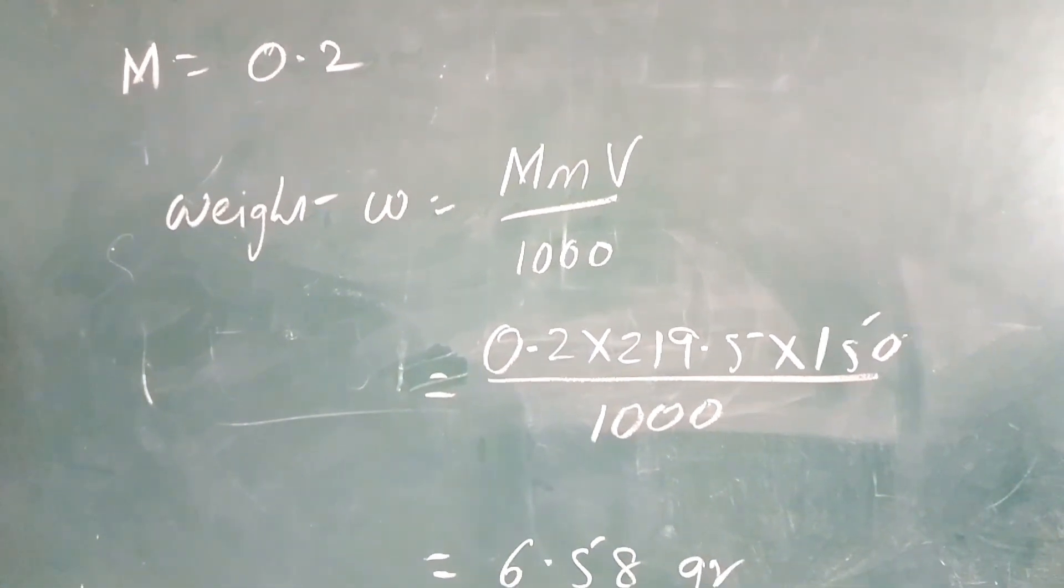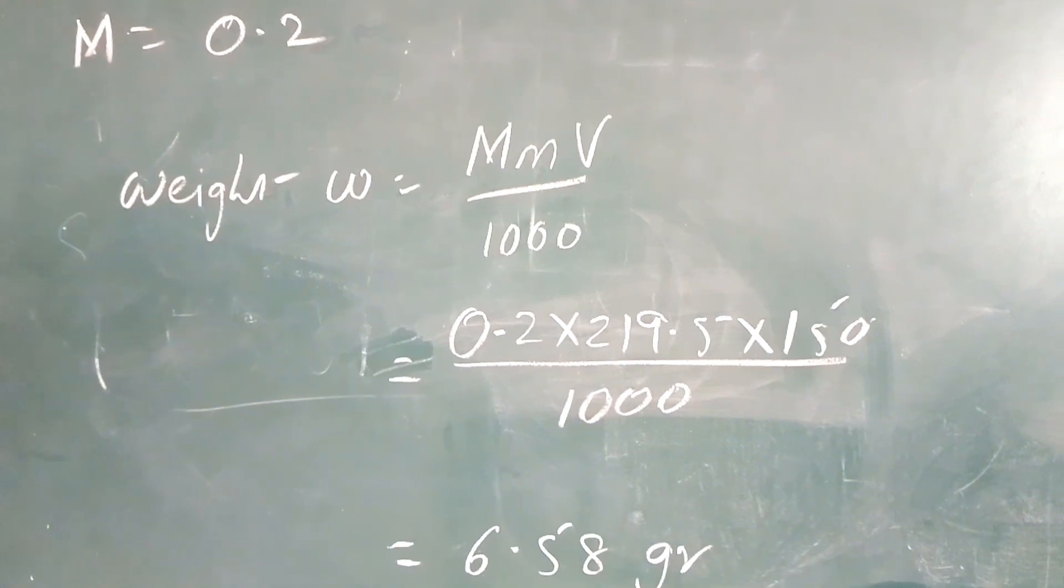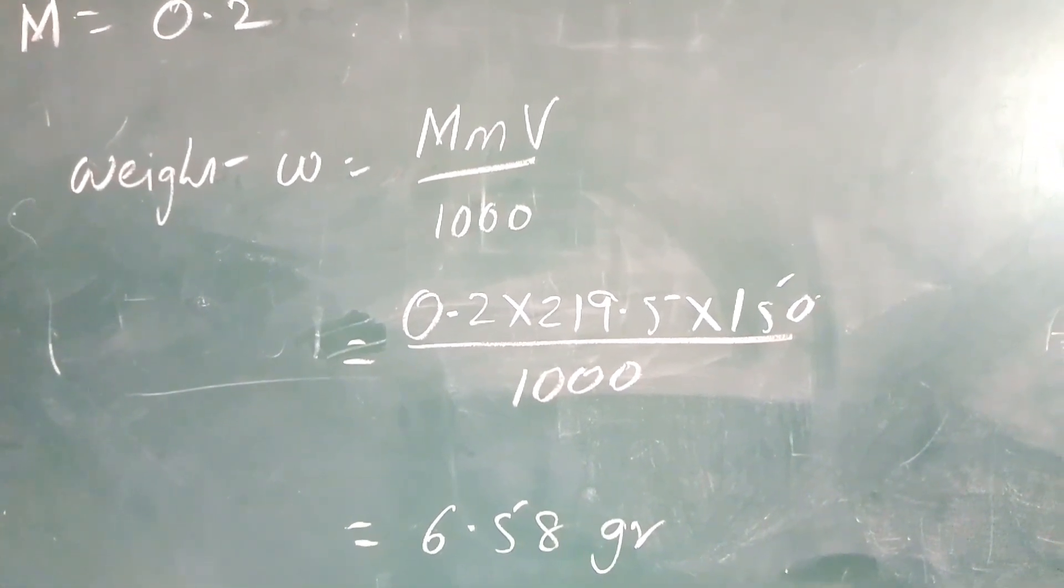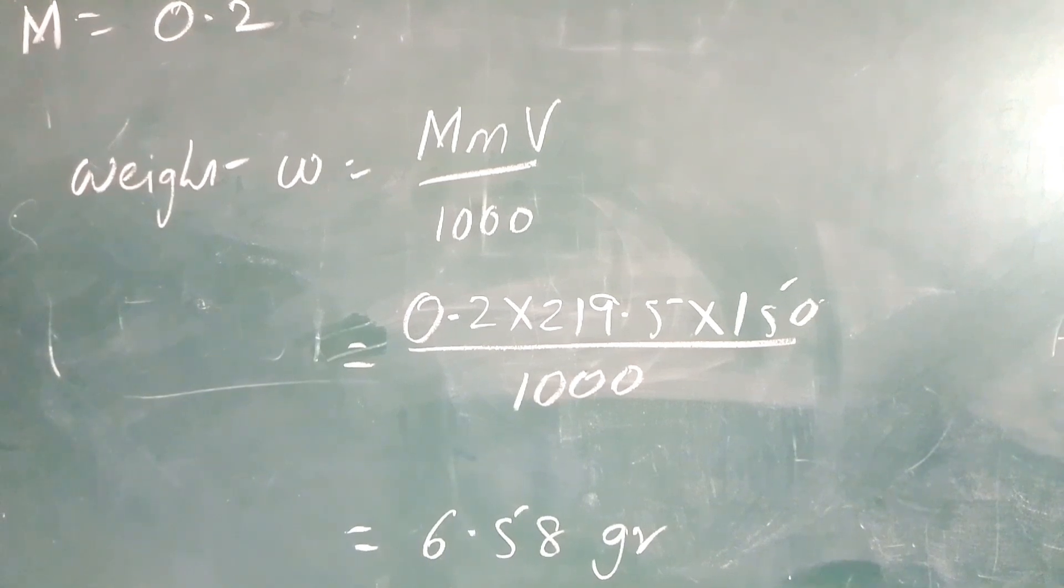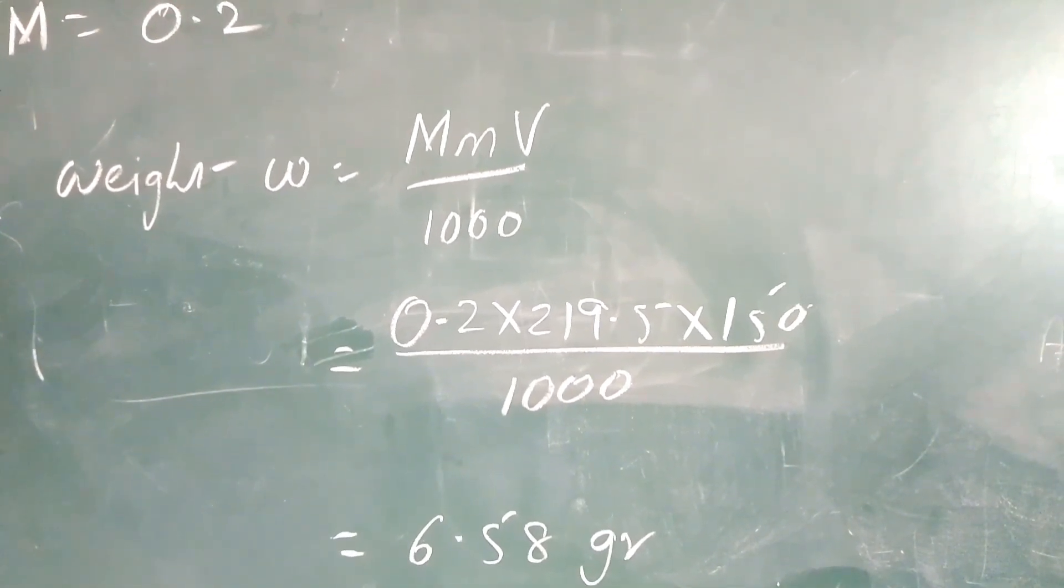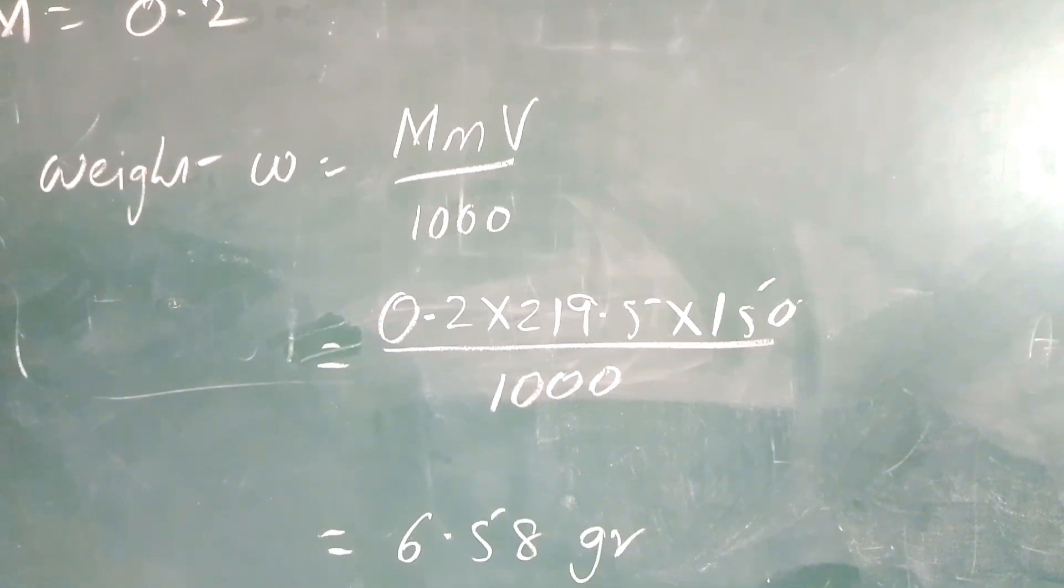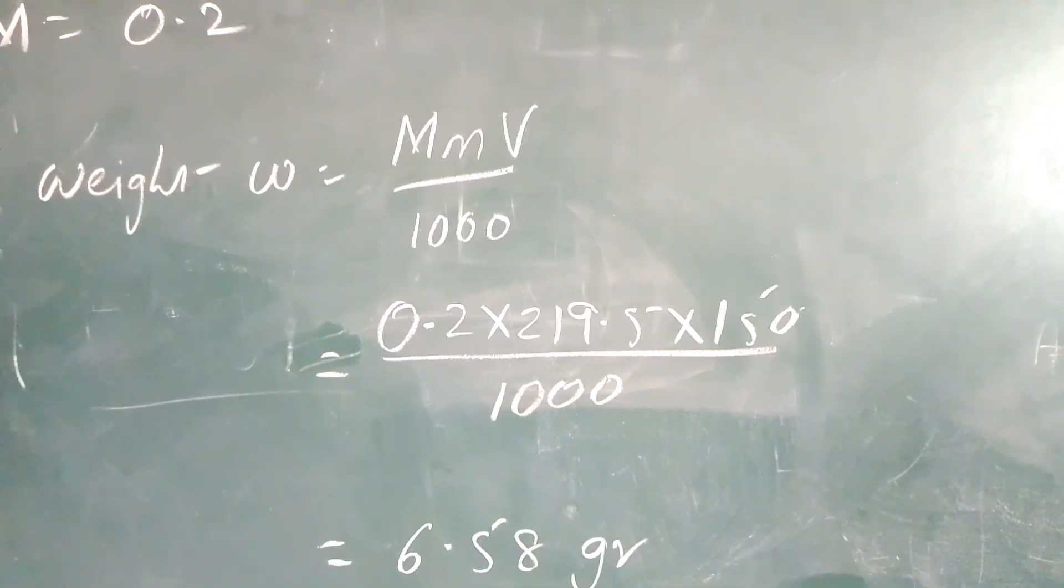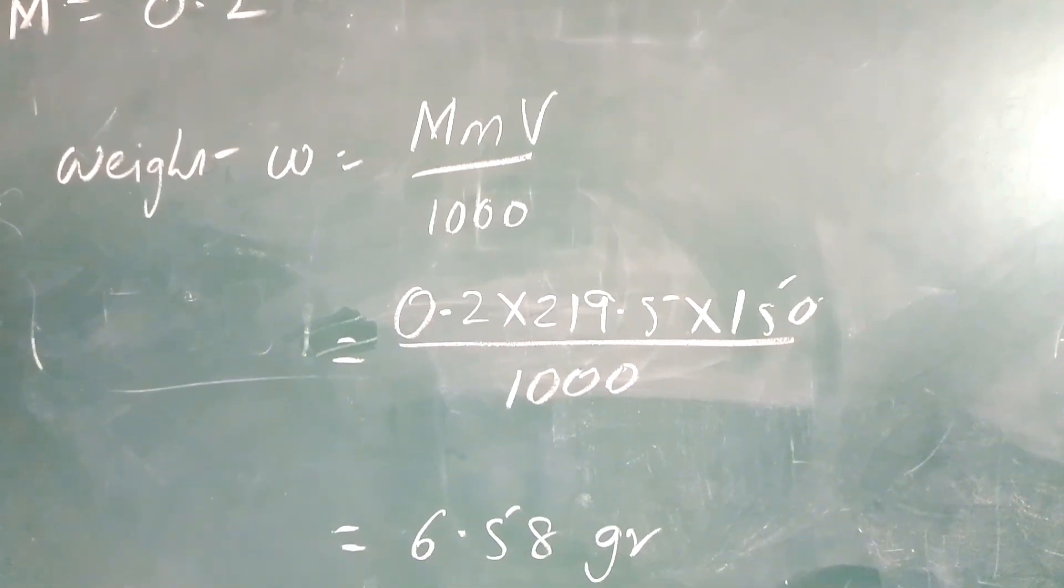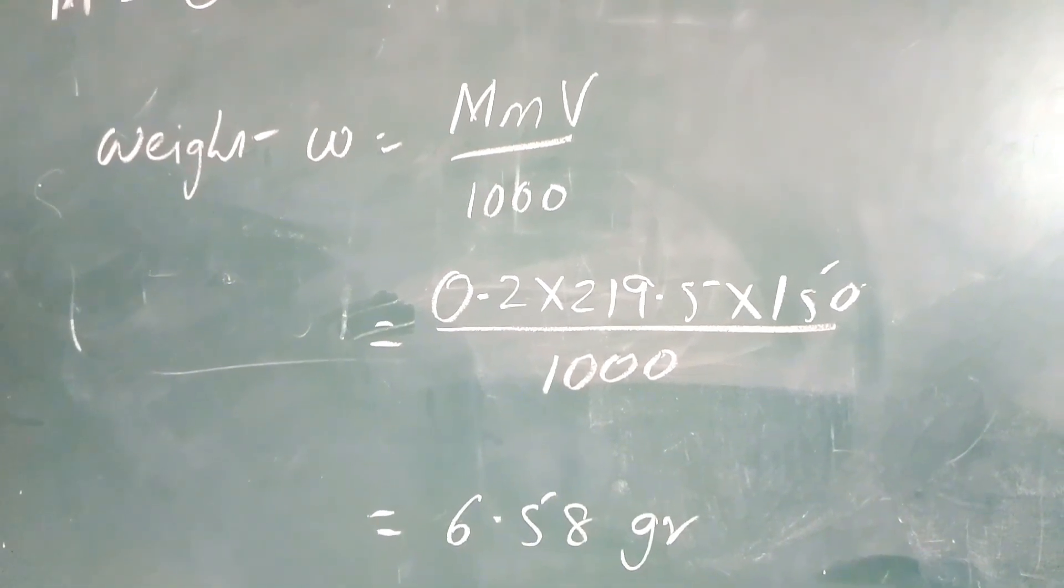The weight of zinc acetate dihydrate that should be added to 150 ml of solvent is given by W equals capital M small m capital V divided by thousand. Substituting the values: molarity 0.2 into the molecular weight 219.5 and the volume of solvent 150 ml divided by thousand, you will be getting nearly 6.58 grams.